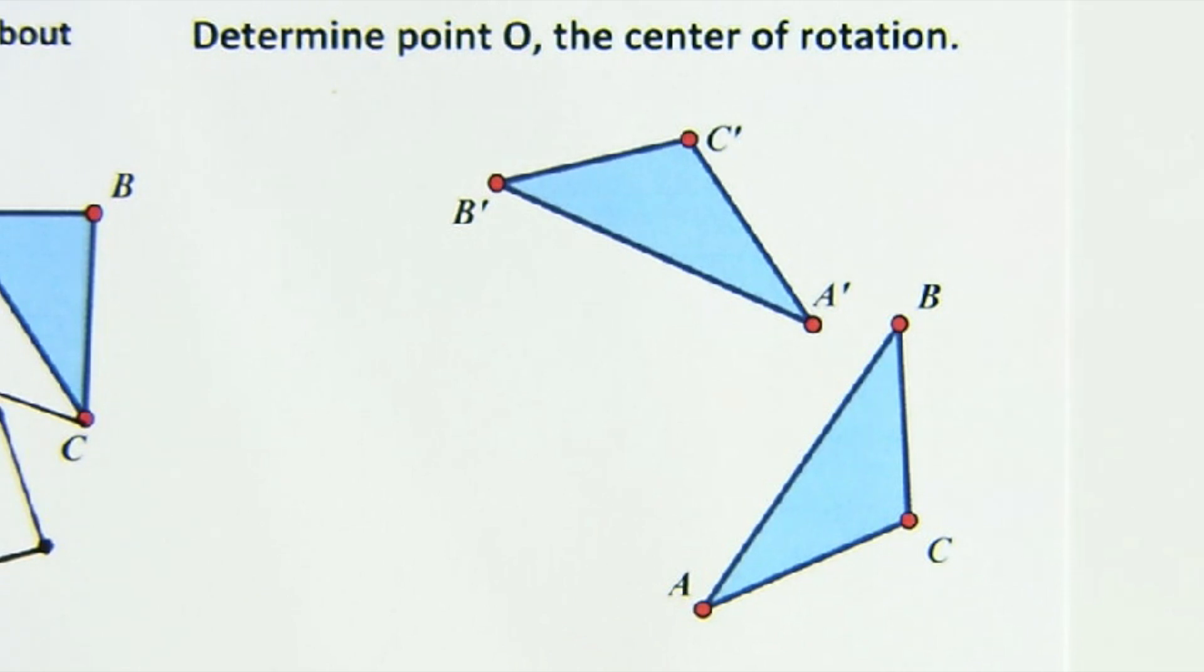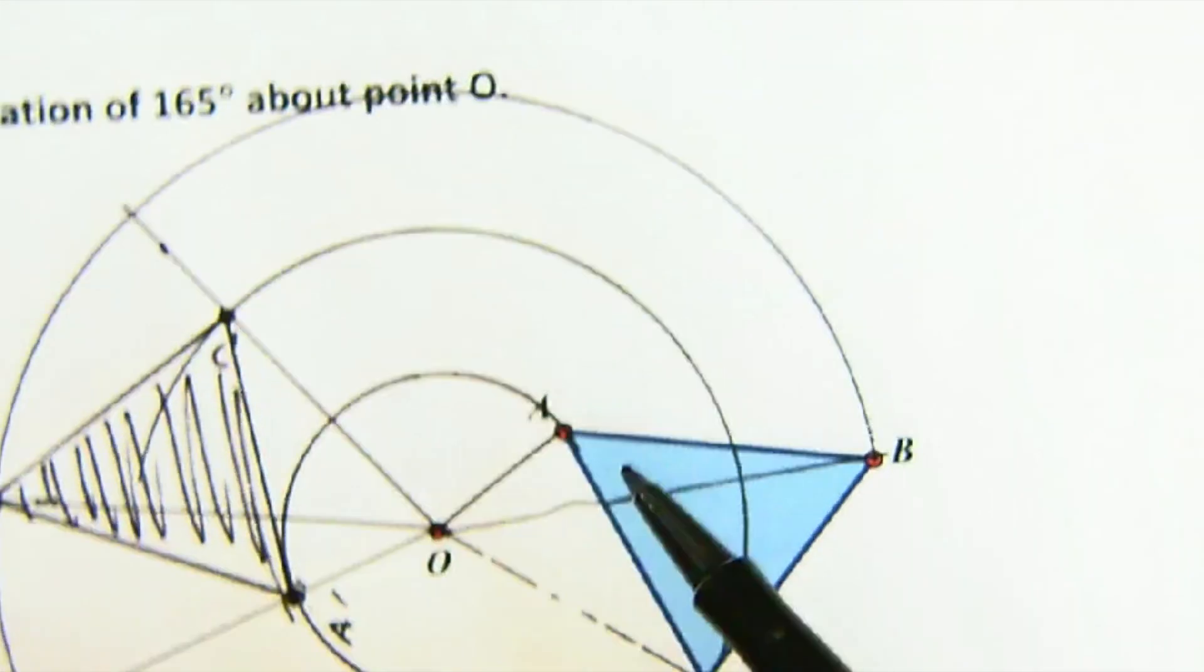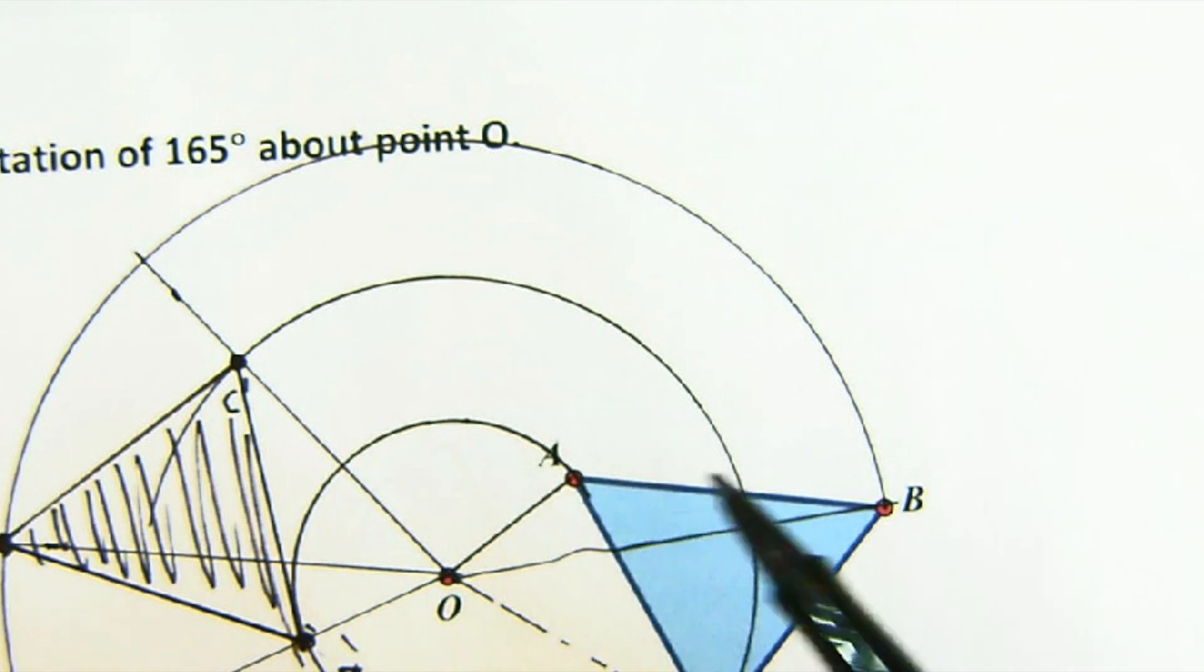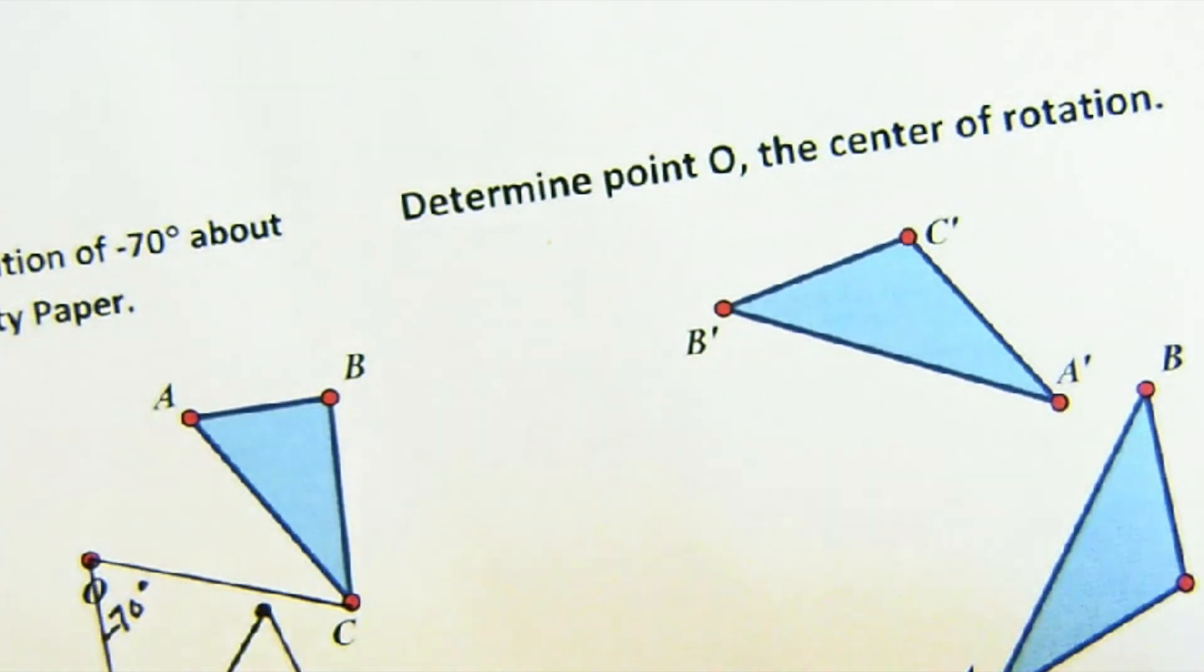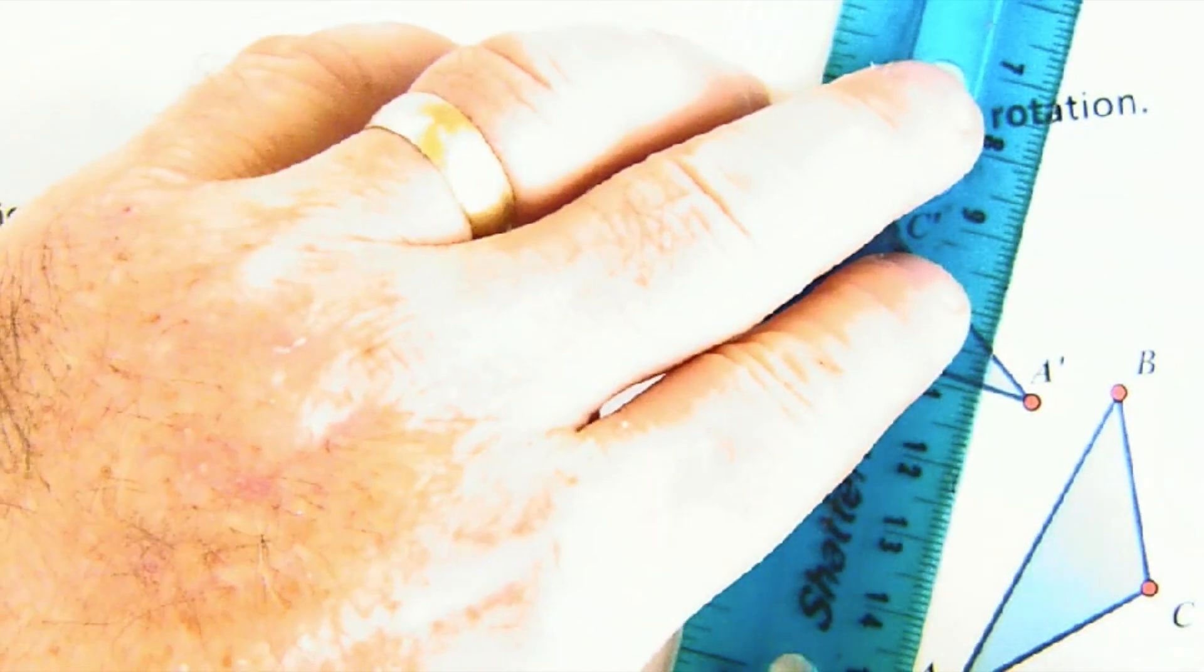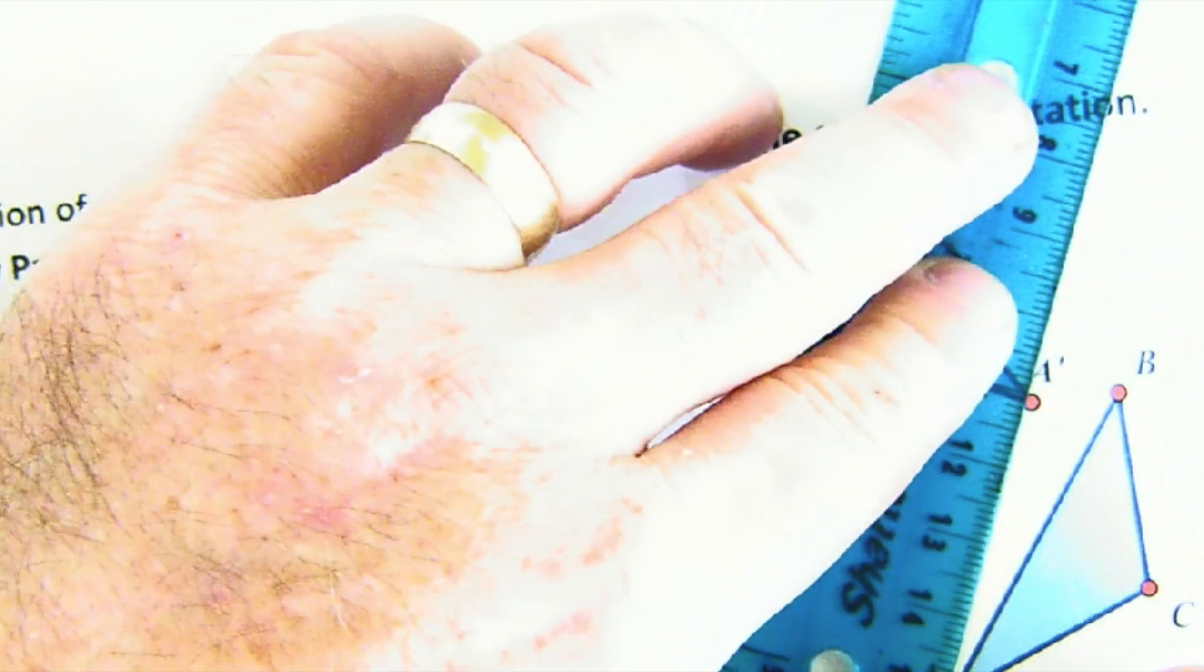And of course, what we're going to do is we are going to do—everything moves. Everything moves. Let's go back to here. Everything moves upon an arc. And so there is a distance that's between them that the perpendicular bisector will help us with. Let me show you what I mean by that.